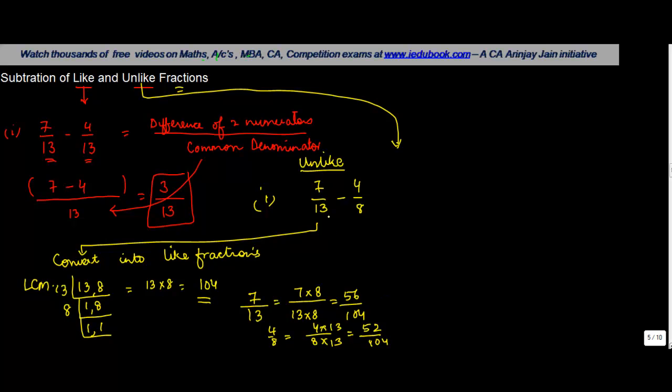And now it becomes easy. So you can write this as 56 upon 104 minus 52 upon 104. Again, now these are like fractions. And we saw how do we deal with like fractions. The denominator becomes the denominator and we do 56 minus 52, 4 by 104.